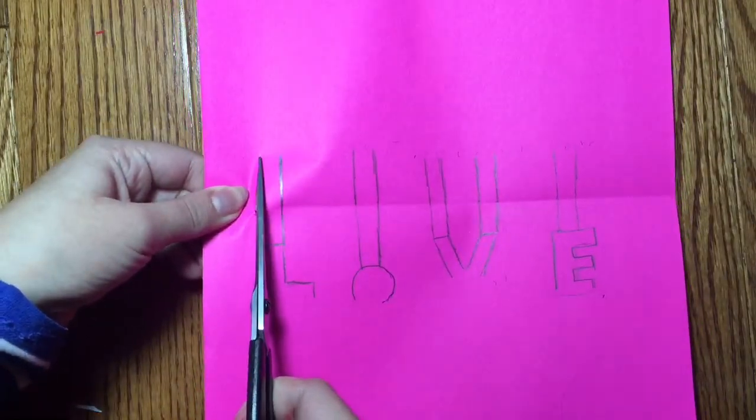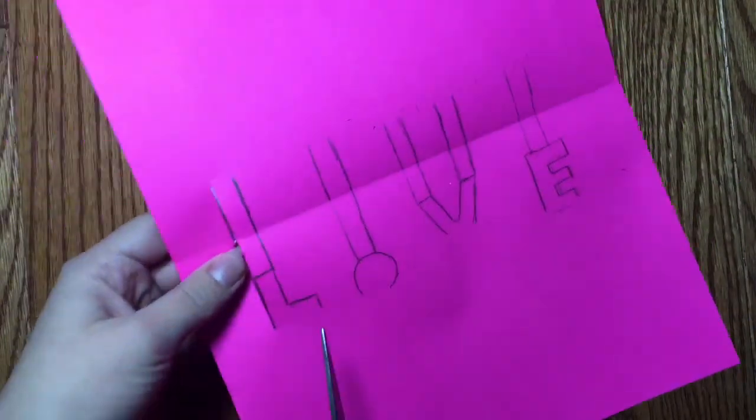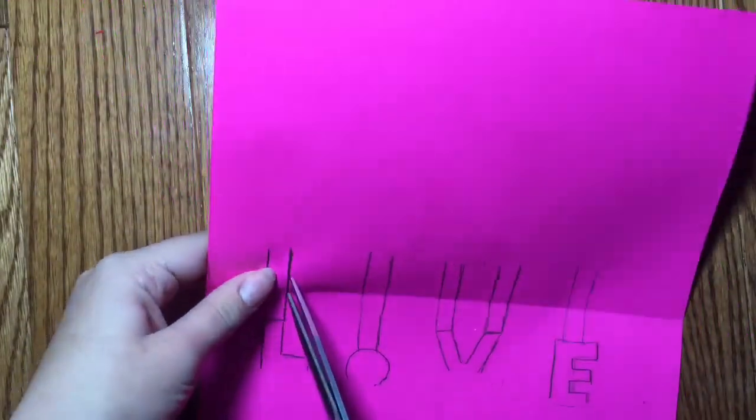To help cut the shapes, something that really helped me was scrunching the paper a little bit so I could create a hole and then make a line from there.